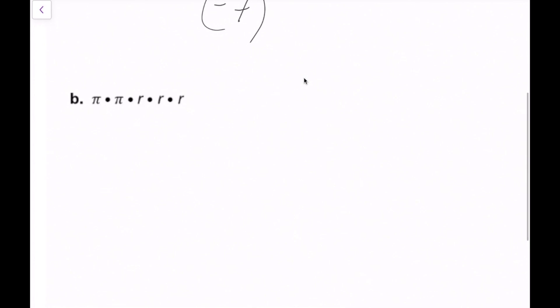Down here we have pi times pi times r times r times r. In this case we have two different bases: pi and r. There are two pi's, so this is going to be rewritten as pi squared, or to the second power. Then I have three r's being multiplied, so I can write that as r cubed. I can put these together because in math, the assumed operation of two things next to each other is multiplication. So this is our final answer: pi squared times r cubed.